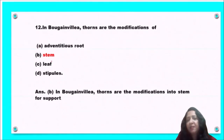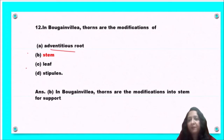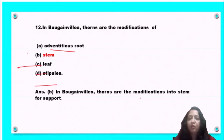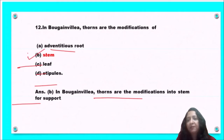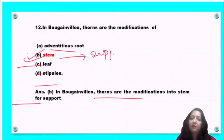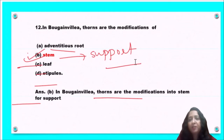Next question: in Bougainvillea, thorns are modifications of adventitious root, stem, leaf, or stipules? In Bougainvillea, thorns are modifications of the stem and are used for support. So option B is the correct answer.